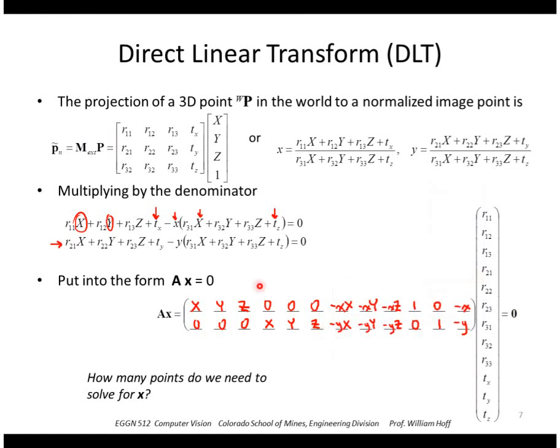We have essentially two equations produced by a single point correspondence. We have a total of 12 unknowns, so we need a total of six points minimum to solve for those unknowns.